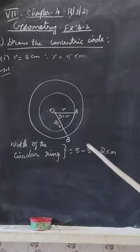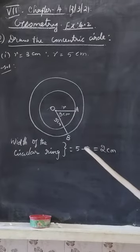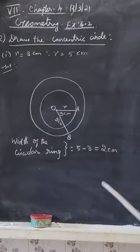5 minus 3 equals 2 centimeters. So the width of the circular ring is 2 centimeters. Thank you.